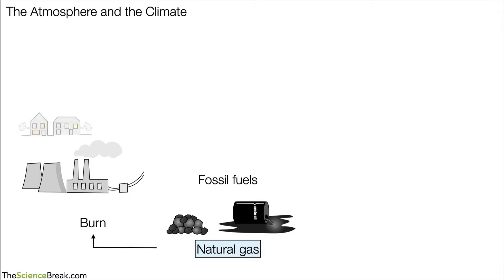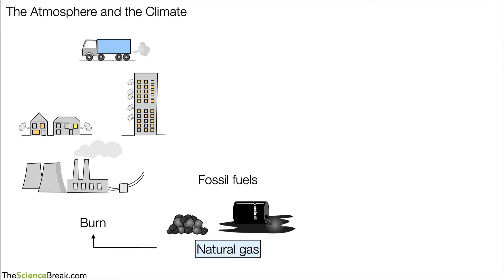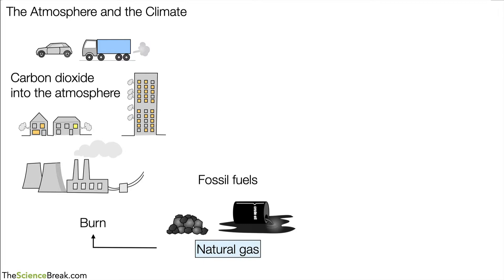We also use fossil fuels for heating. Natural gas is often used as a fuel for heating homes. Crude oil is a big source of petrol and diesel and fuel for vehicles. All of these burn fossil fuels and produce carbon dioxide, releasing it into the atmosphere.